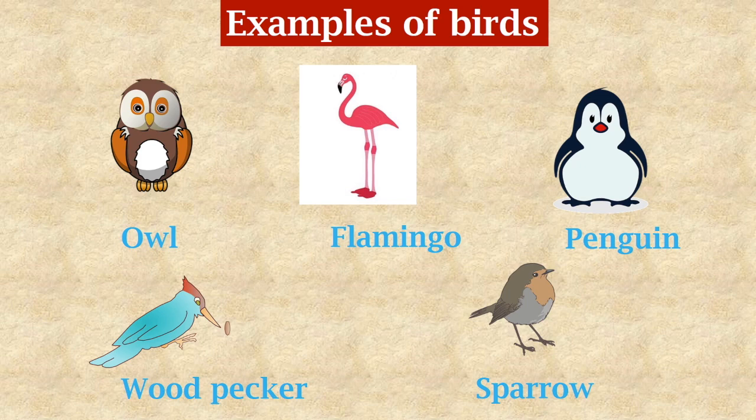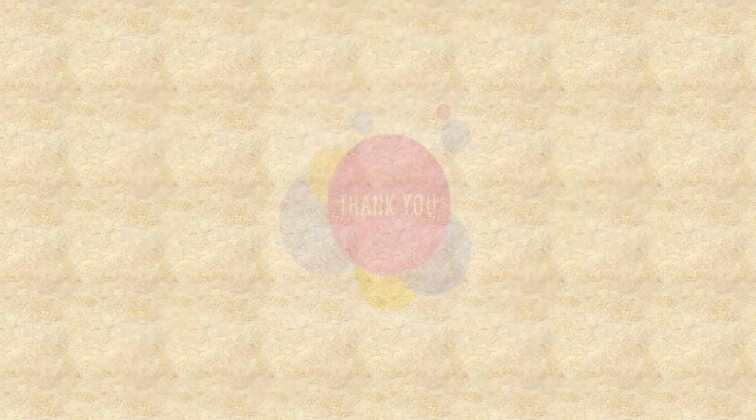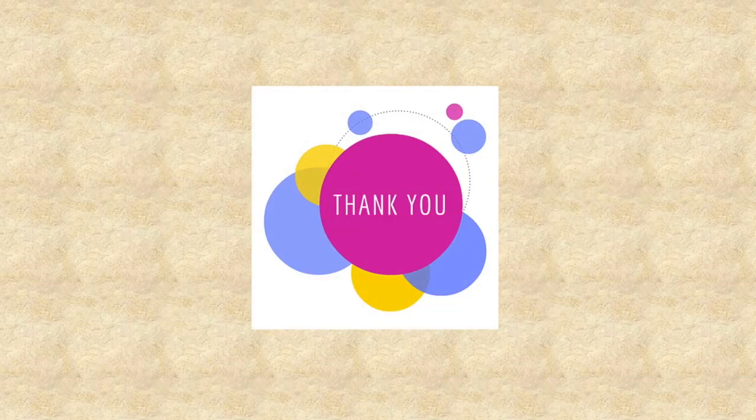Some examples of birds are owl, flamingo, penguin, woodpecker, and sparrow. This is all about vertebrates. For invertebrates, please watch our next video. For more videos, please subscribe to this channel.